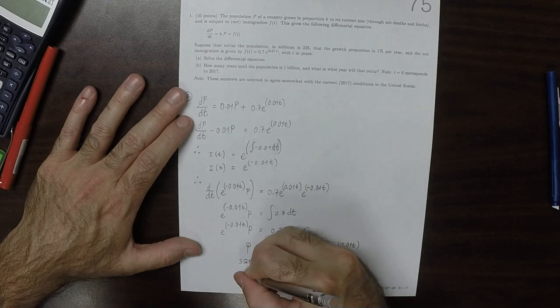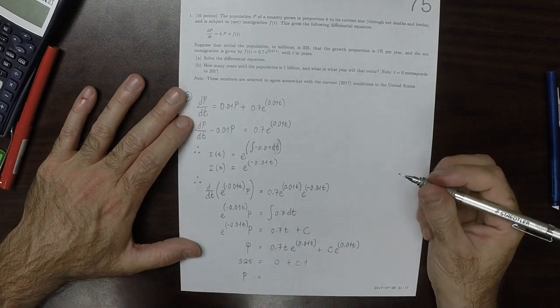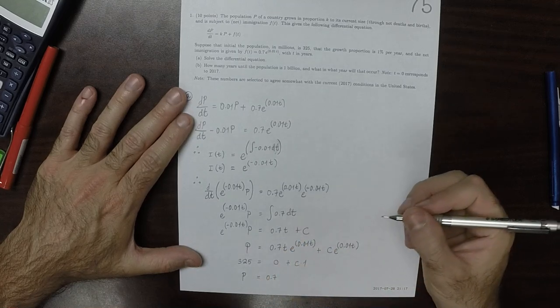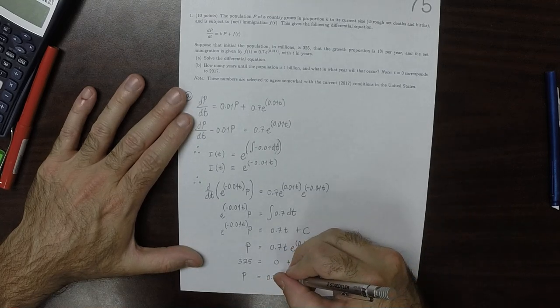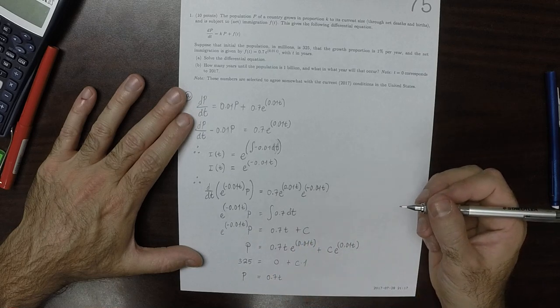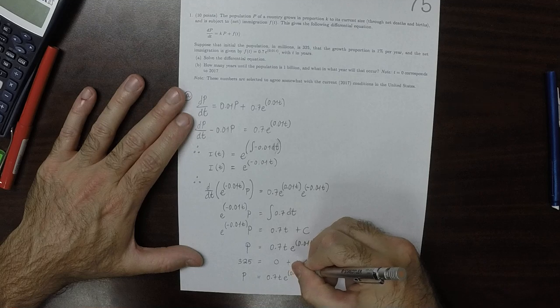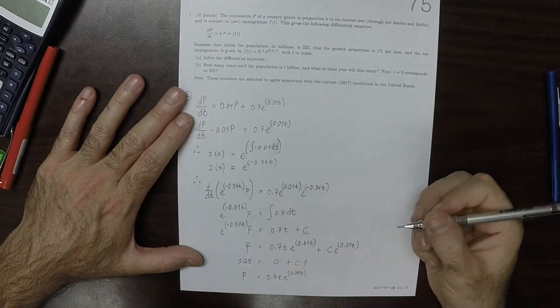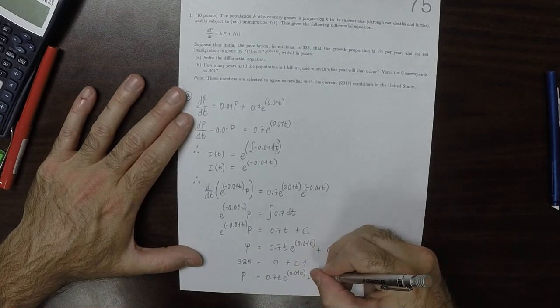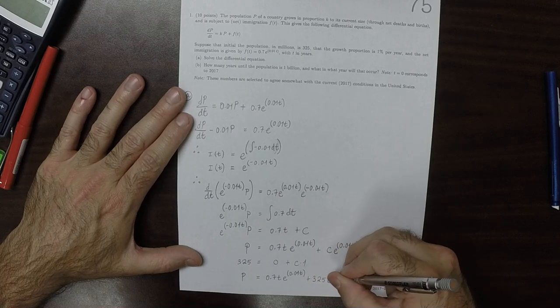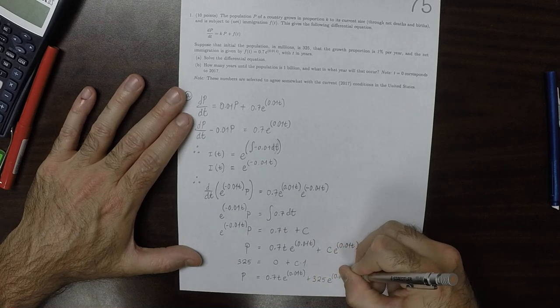As a result, c is 325. So the population is 0.7t times e^(0.01t) plus 325e^(0.01t).